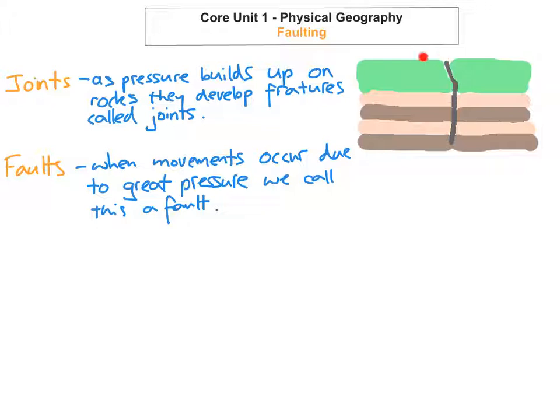One thing to know about faulting is that they usually take place along plate boundaries because of stress or compression. And the faults can be horizontal, so going across or they can be vertical going down.